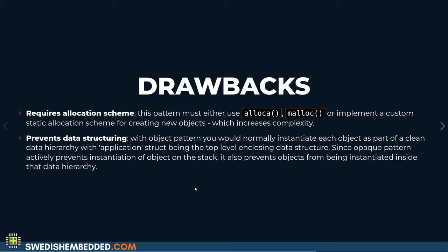The two main drawbacks: first, you need to decide on an allocation scheme, which is more complex. Second, it prevents structuring your data in a single data tree — you can't instantiate objects directly under the application object. You store only a pointer in your application structure, which can be problematic if you forget to deallocate, or deallocate using the wrong function, such as calling free on a stack-allocated object.